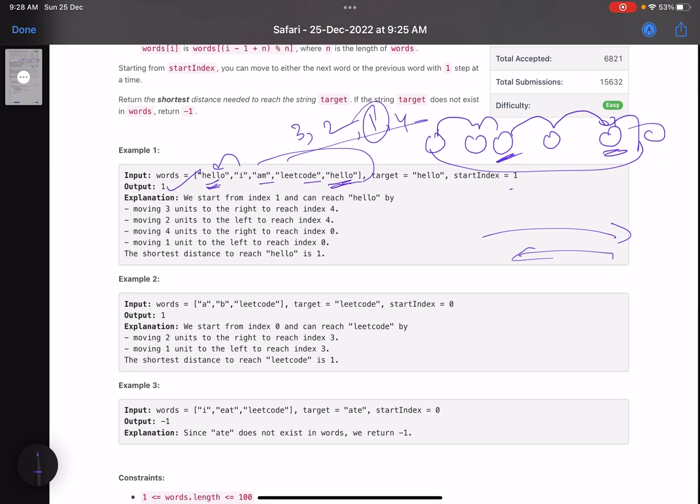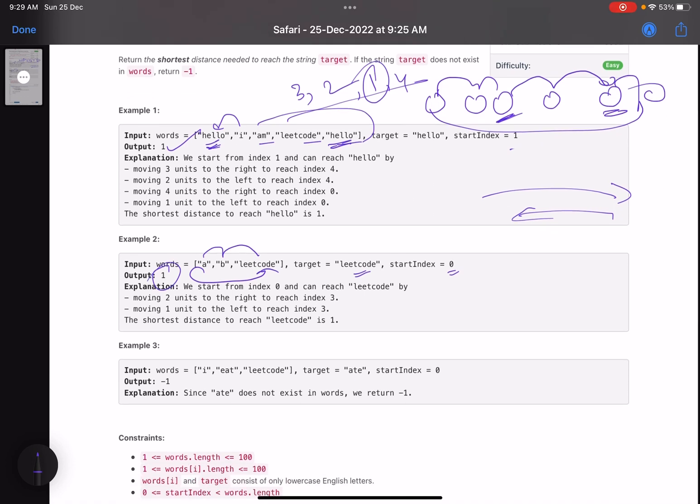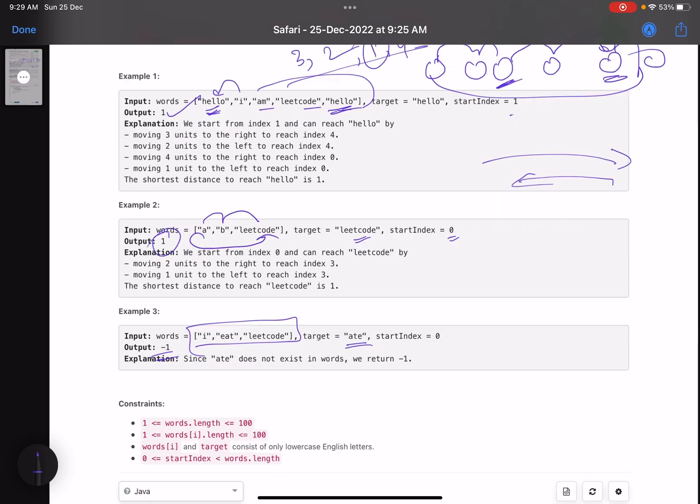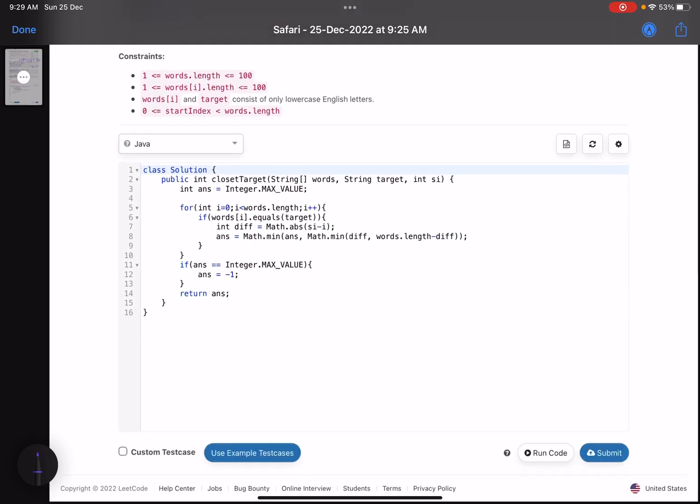Similarly here, start index zero, you need to move to LeetCode. You can move one, two, or you can directly move one, so one is your answer. For this example, you want to search for eight which is not in the string, so you return minus one. Simple stuff.